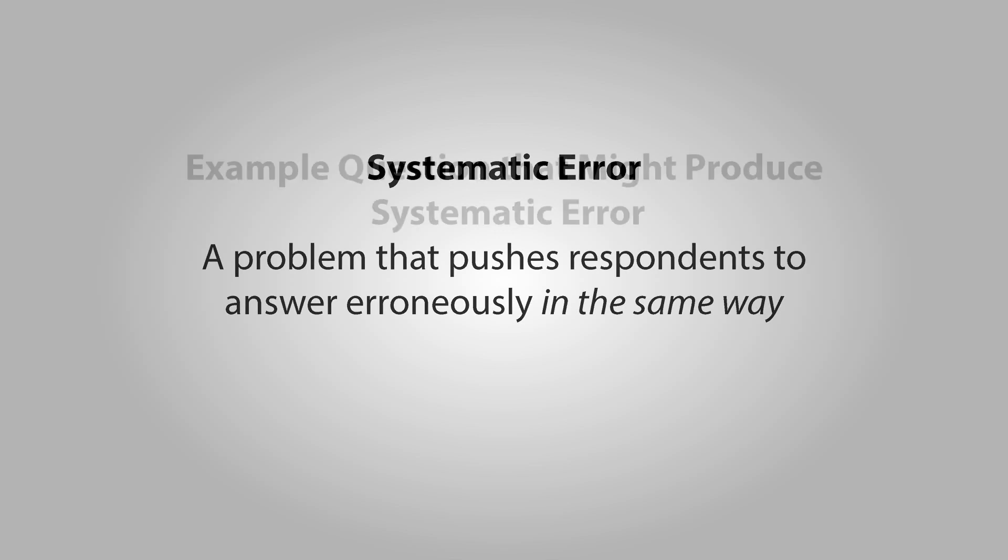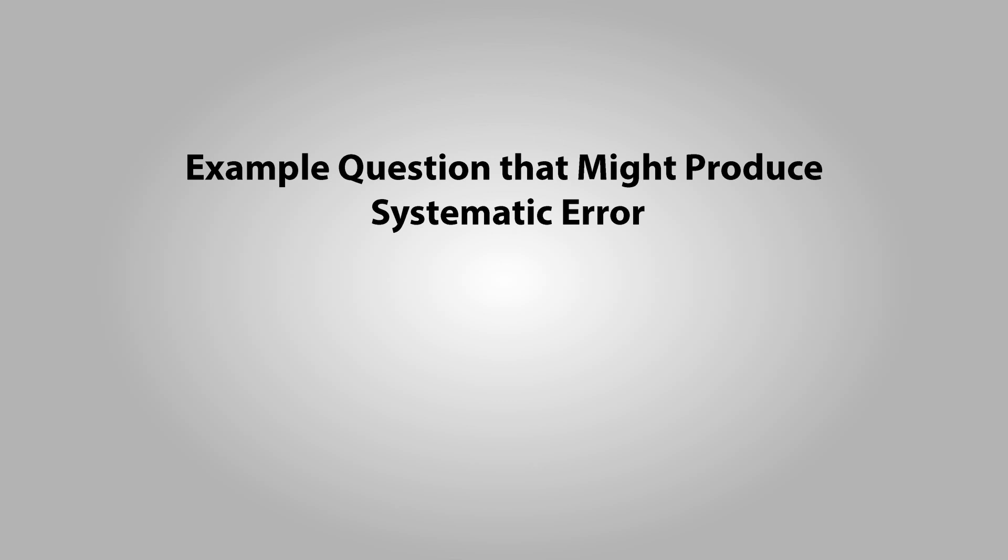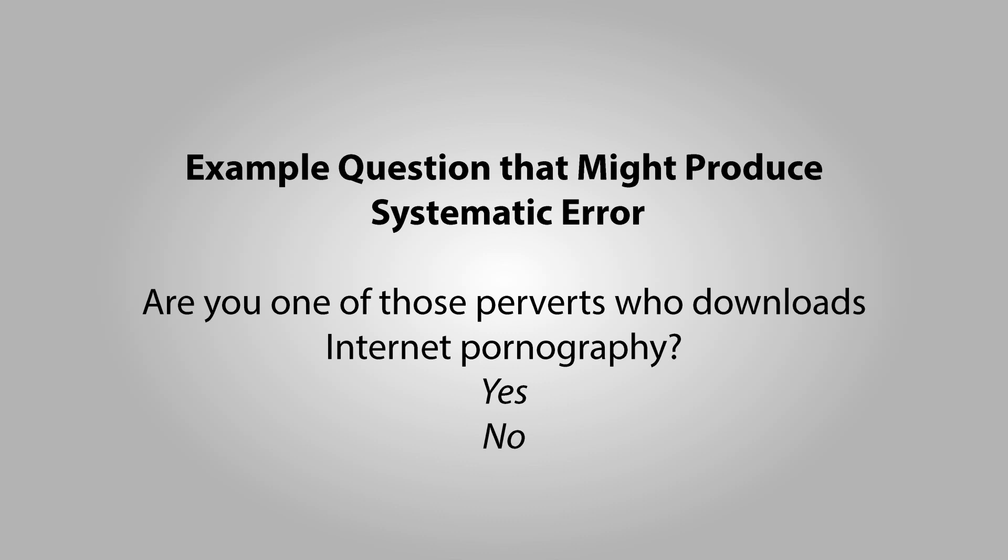Let me give you an example. Here's an example of a question that would probably produce systematic error. Let's say I was studying people's pornography use, and I asked this question: Are you one of those perverts who downloads internet pornography, yes or no? Now, the problems with this question are obvious. By labeling people who download pornography as perverts, I've created a disincentive for people to answer yes. You could imagine people who do download pornography, but don't want the label of pervert attached to them, and so they answer no, even though the true answer is yes. In that type of situation, my studies would probably underestimate the amount of pornography use, because my question was formulated in a way that encouraged a specific answer.